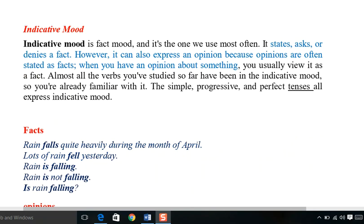For example, 'The cat attacked the mouse.' 'Attacked' is indicative mood — the verb expresses that information is being rendered. The indicative mood is the fact mood; it is the one we use most often. It states, asks, or denies a fact.